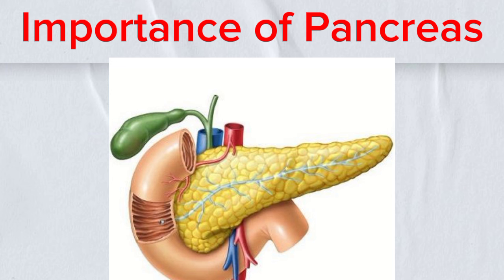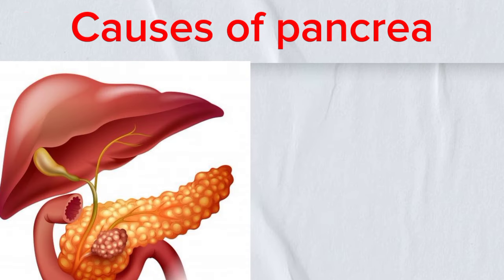The pancreas is primarily known for its role in producing insulin, which regulates blood sugar levels. It also secretes enzymes that aid in digestion. Without a properly functioning pancreas, the body struggles to break down food and absorb essential nutrients, leading to various health complications.